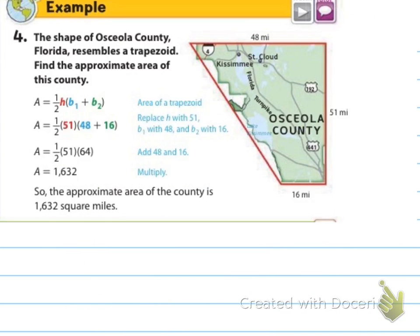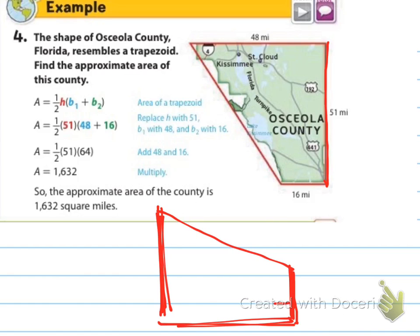Example number four says, the shape of Osceola County, Florida, resembles a trapezoid. Find the approximate area of this county. They're telling us that our height, here's how I know which one my height is. Because, listen, they could give it to us like this. The height is not always just the one that goes up and down. That's not how it works. Your bases are always the two parallel lines. And then your height is the one that comes perpendicular to your base. So, it just so happens that they've given us the height where it's up and down, but it's not always going to be like that. So, I want you to understand that the bases are the parallels, and the height is perpendicular to the bases. Really important stuff to remember.